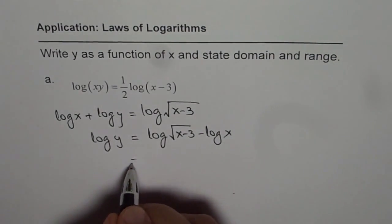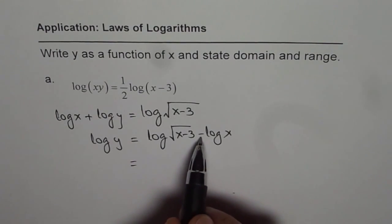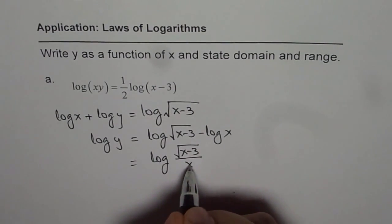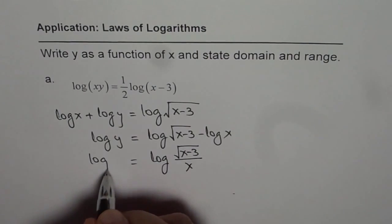Now the right side could be written as a quotient. So we can write this as log of square root of x minus 3 divided by x. On the left, we have log of y.